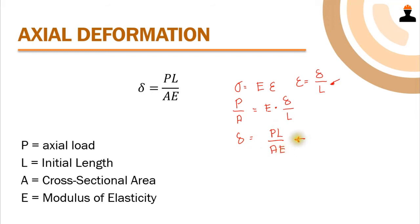This formula PL over AE is used to compute the deformation of a material under axial load — you may recall it from surveying as the deformation of a tape due to pull. Here P is the actual load, L is the initial length, A is the cross-sectional area, and E is the modulus of elasticity. So PL over AE gives us the change in length of the material under axial load.